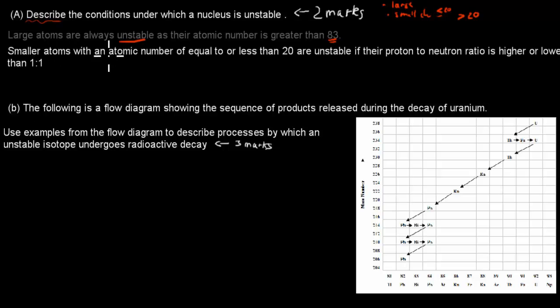Smaller atoms, with the atomic number equal to or less than 20, are unstable if their proton-to-neutron ratio is higher or lower than 1 to 1. Again, we just described it, you don't have to explain why, just describing it.